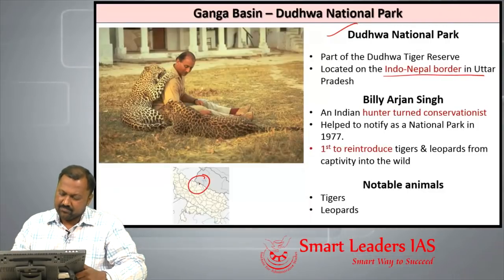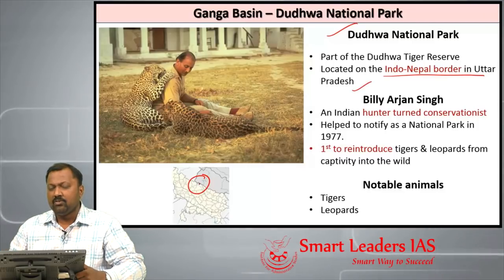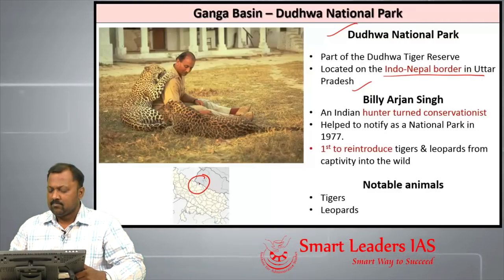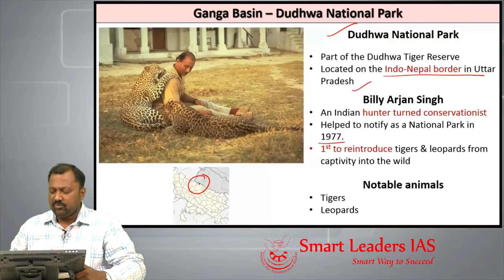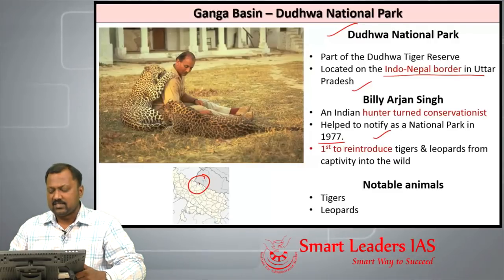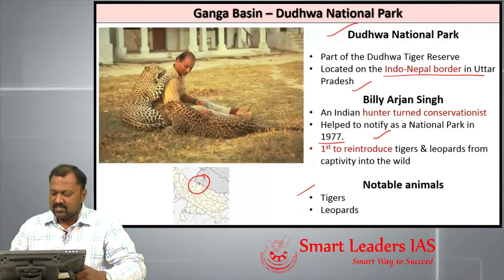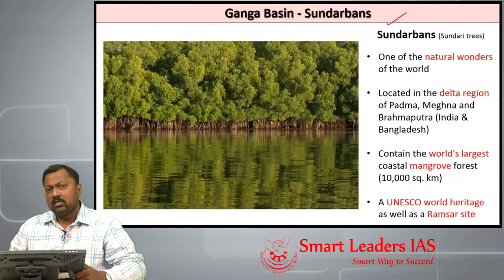Dudhwa National Park is located on the Indo-Nepal border in Uttar Pradesh. It came into existence because of the work of Billy Arjan Singh, who transformed from a hunter into a conservationist and helped notify it as a national park in 1977. He was the first to successfully reintroduce tiger and leopard from captivity into the wild. Notable animal species in Dudhwa include tigers and leopards.